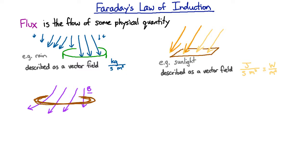It depends on the strength of the vector field—more watts per square meter means more energy coming through, more kilograms per second per square meter means more water, and more magnetic field means more magnetic flux. Secondly, it depends on the size of the area. The bigger the area, the more flux you'll have coming through.